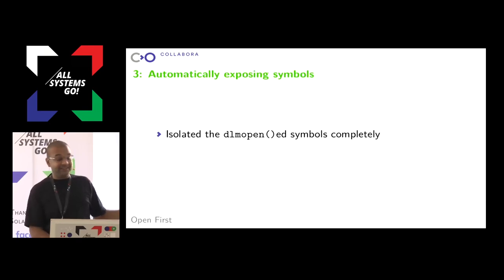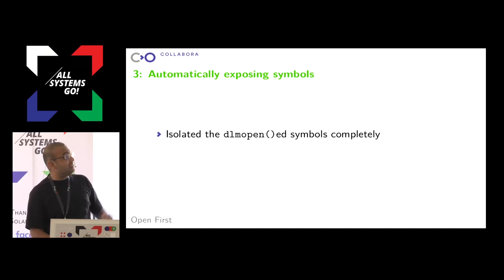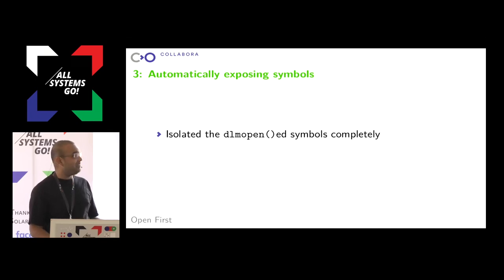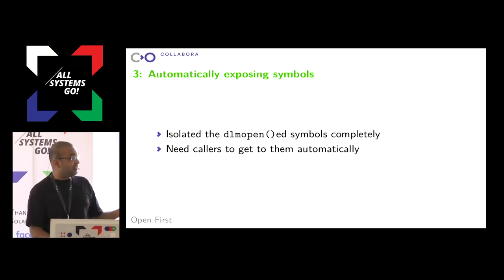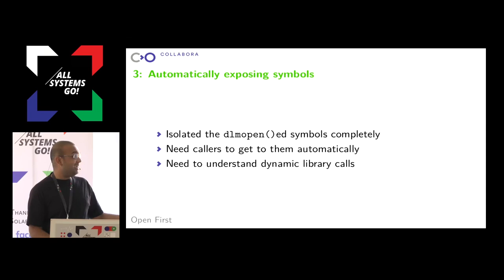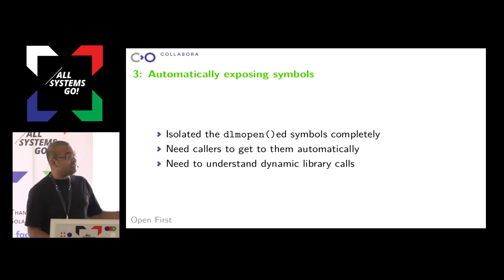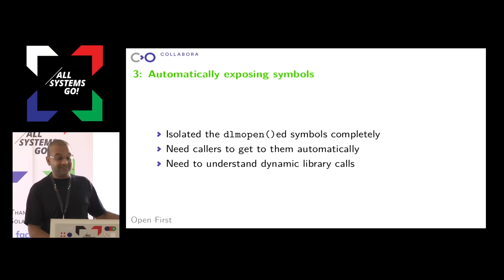We haven't had to rewrite the linker, which is always a plus. What we've achieved is we've isolated the dlmopen symbols completely — they're not available by default to anything — so we still haven't met our goal of all this being frictionless and seamless. We need a caller of our library that's coming from the host to get those symbols automatically. In order to do that, we need to understand how dynamic library calls work. We're going to do a little dive into that, but at the end of it we'll find that we don't actually need to know any of that detail, because it sort of works the way we need it to.